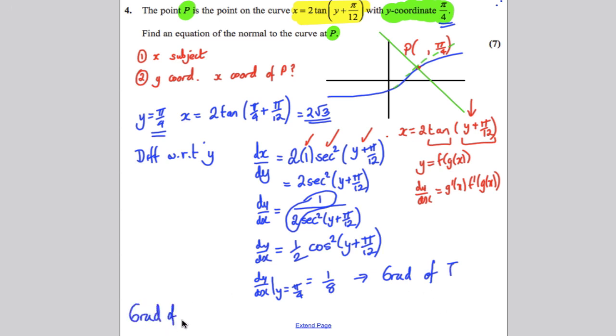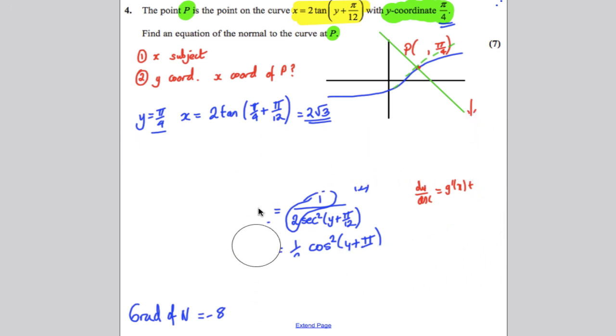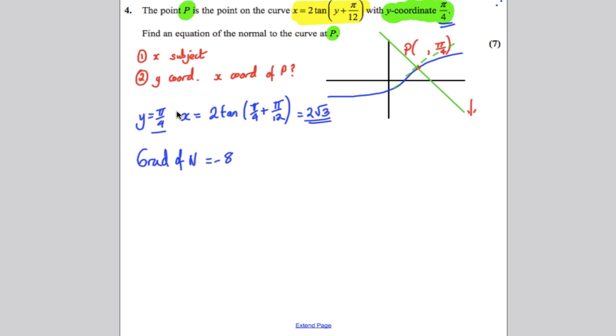So the gradient of the normal is the negative reciprocal of that would be negative 8. Now at this point, I'm just going to rub off a little bit above here. I'm going to rub off this working here. So hopefully you've got that down. And we know the gradient of the normal is negative 8. We know a point on the normal line, which is pi by 4, 2 root 3. So we're going to use the formula y subtract y1 is mx subtract x1. So y subtract pi by 4 is negative 8x subtract 2 root 3. You could expand it out and collect that terms. It doesn't ask you to put it in any particular form. I just leave my work like that and move on. And there's your answer.